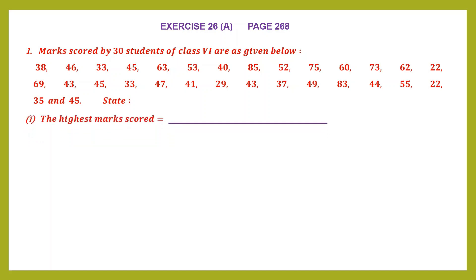Question 1 is the highest marks scored. We have to state the highest marks scored. Now, let's begin by looking at all the marks from the first one. We have 38. 46 is greater, so I can strike off 38 and all those in the 30s. Here I find 63, so even the 40s are smaller. I can strike off the 40s also. Now I found 85, that means even 63 is smaller. All numbers smaller than 85, let me strike off.